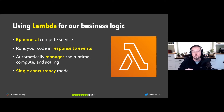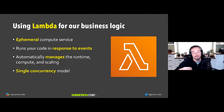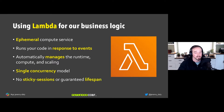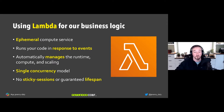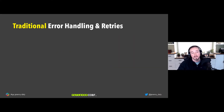Lambda uses a single concurrency model — single-threaded for every concurrent execution, which means you can't share things in the same thread. This also affects downstream systems that can't scale as well. There are no sticky sessions or guaranteed lifespan, so you can't guarantee a user hits the same Lambda function twice, and a function's actual runtime duration is not fully under your control.